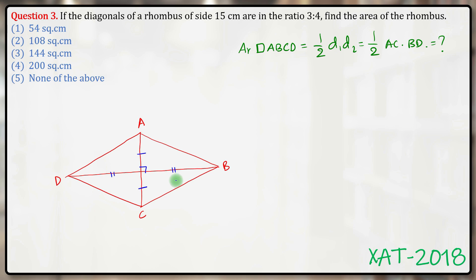We're given that diagonals of this rhombus are in the ratio 3:4. If AC and BD are in the ratio 3:4, then half of AC and half of BD will also be in the ratio 3:4. Which means I can assume this part, let's call this point O, AO to be 3x and BO to be 4x.